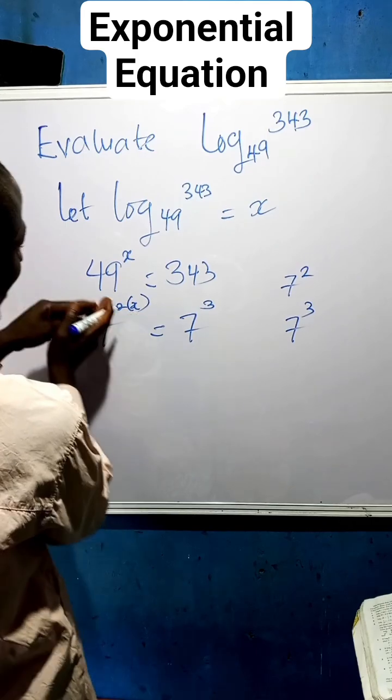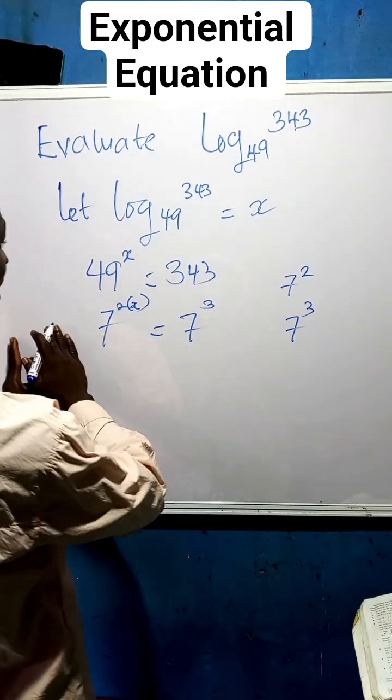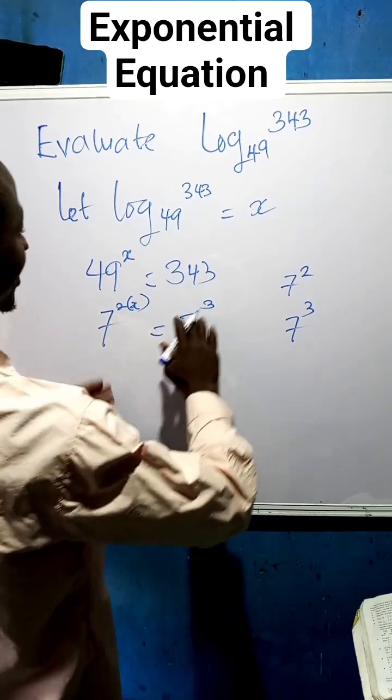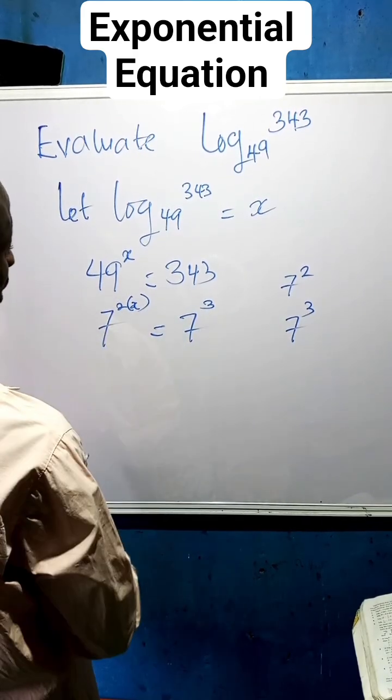Now you can see that we are having the same base and different power. What you are going to do is to equate the power, because the base are equal, definitely powers are also equal. So I can have the value of x from the power.